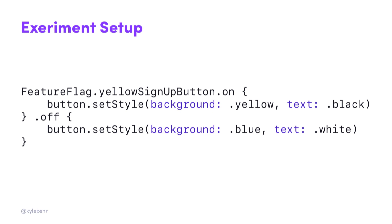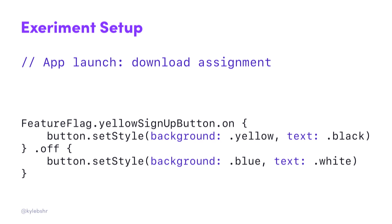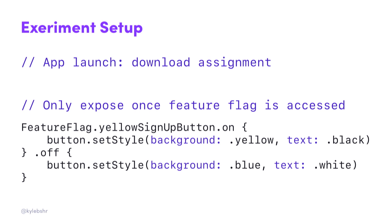Two keywords are assignment and exposure. Assignment is how the app knows which experience to show the user — whether the feature is on or off — and that happens on launch when we download a configuration that tells the device which variant to use. A common pitfall here is to consider this the exposure, as if the user is in your experiment. Let's say the user opens the app but never goes through the sign-up flow and you count them in your experiment — you're misrepresenting the metrics because they've never even seen your test. So exposure doesn't happen until the last second: when you actually access the feature flag to set up your UI, that's when we tell the server the user has seen this experience and you should count their metrics in your statistical analysis.